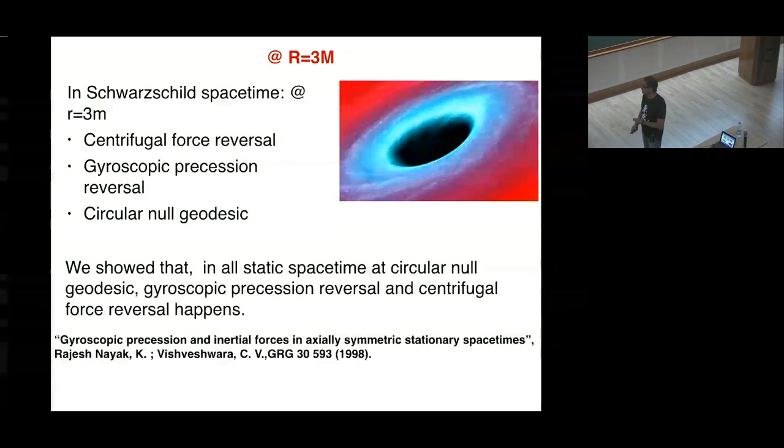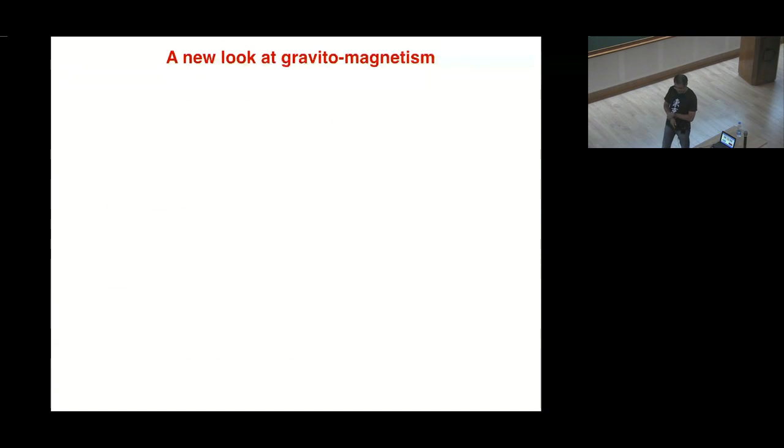Here we showed formally that in the case of all static spacetime, circular null geodesic necessarily means the reversal of gyroscopic precession and centrifugal force. Now, this result cannot be extended to general axially symmetric spacetime such as Kerr metric where all this happens. There are two null geodesics, co-rotating and counter-rotating. They happen at different places at the same time. And this reversal of gyroscopic precession and centrifugal reversal also does not happen at the same place. You can show formally that it is not possible.